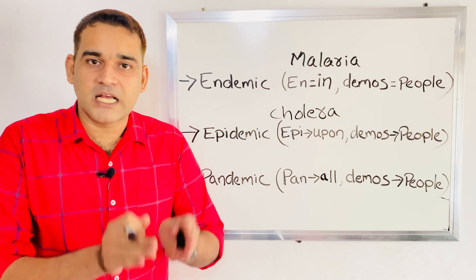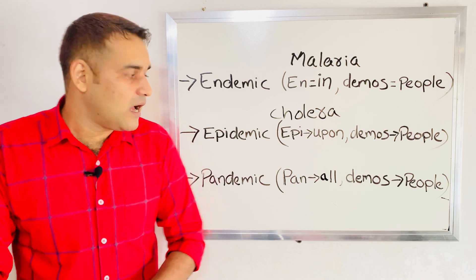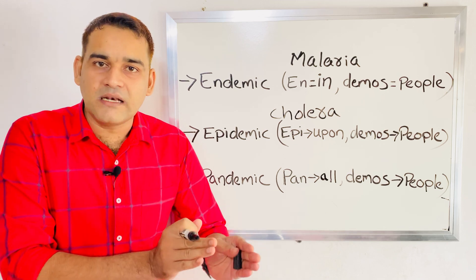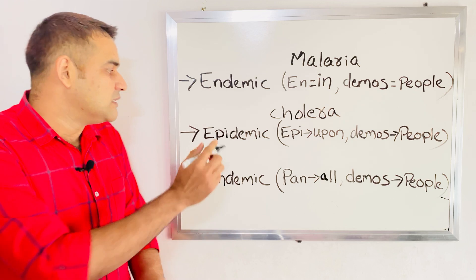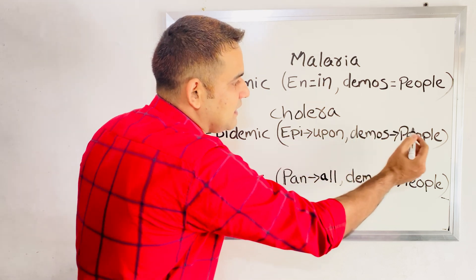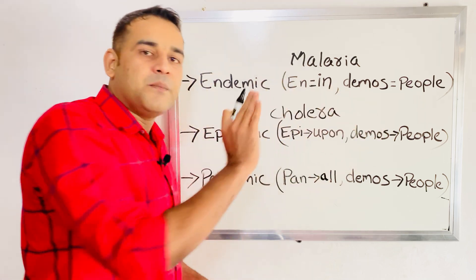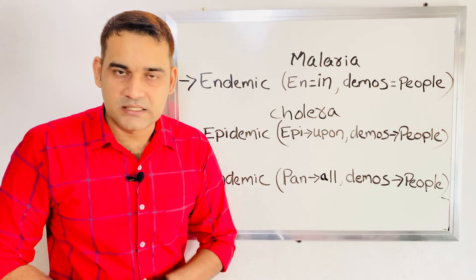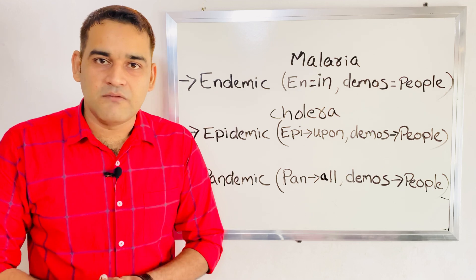We expect a certain number of cases to occur, but when the disease spreads beyond that expectation in an area, we call it an epidemic. The word epidemic comes from 'epi', meaning 'upon', and 'demos', meaning 'people'. So epidemic is the outbreak of disease more than normal expectation upon the people of a particular area. Cholera in India is a good example, though the specific disease will change by country.